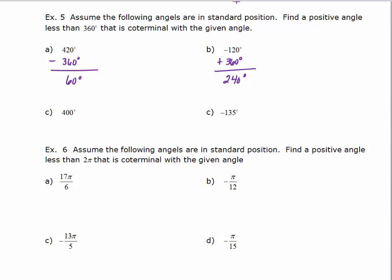Going back to part A — what if we wanted to find a negative angle coterminal with 420? I already have 60 degrees that's coterminal, so I subtract 360 to generate another coterminal angle, giving me negative 300 degrees. For negative 120, I've already generated a positive coterminal by adding 360. To find a negative coterminal, I subtract 360, giving me negative 480 degrees.